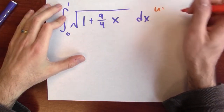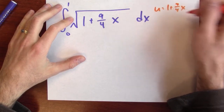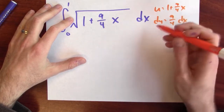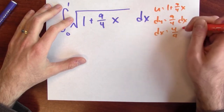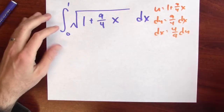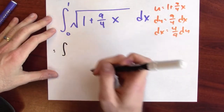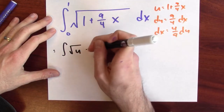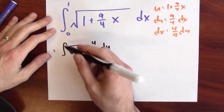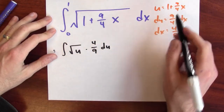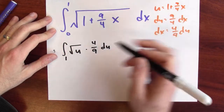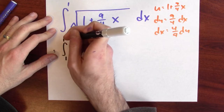Just have no fear, keep going. We'll use a u-substitution: let u equal 1 plus 9 fourths x. So du is 9 fourths dx, or alternatively dx is 4 ninths du. That means this integral is the same as the integral of the square root of u times 4 ninths du. The new bounds of integration: when x is 0, u is 1; and when x is 1, u is 13 fourths.